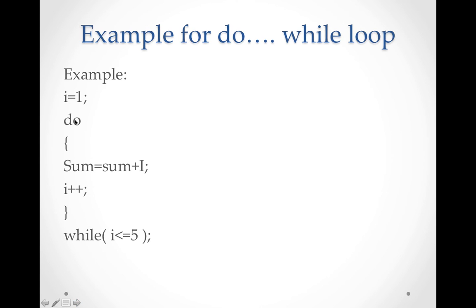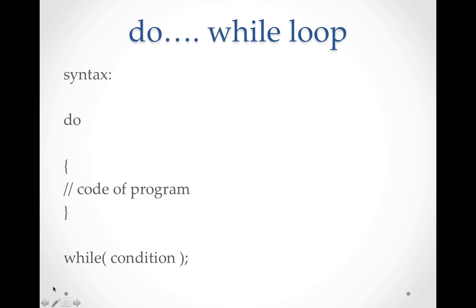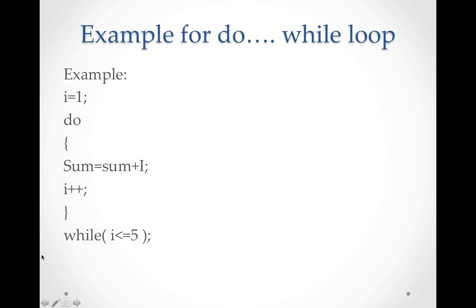Let's see the do-while example. i equals 1 — declare the starting value. Sum equals 0. Do the procedure first: sum value is calculated as 0 plus 1, and stored in sum. i++ means i becomes 2. Then the condition is checked: 2 compared with 5 is true. You have just written values into the syntax, and that is how your program works.